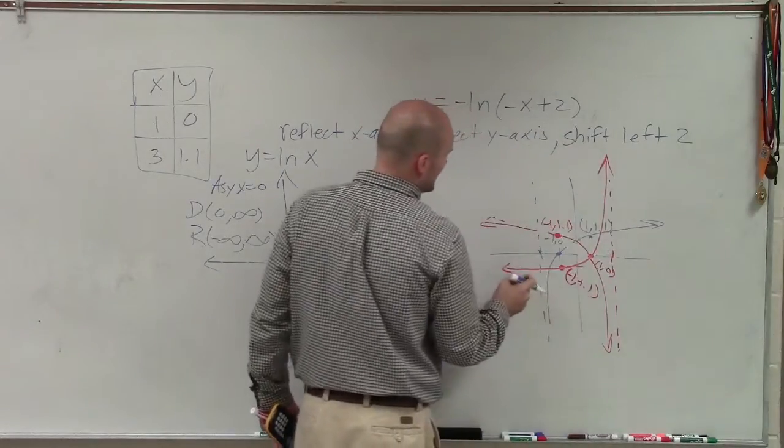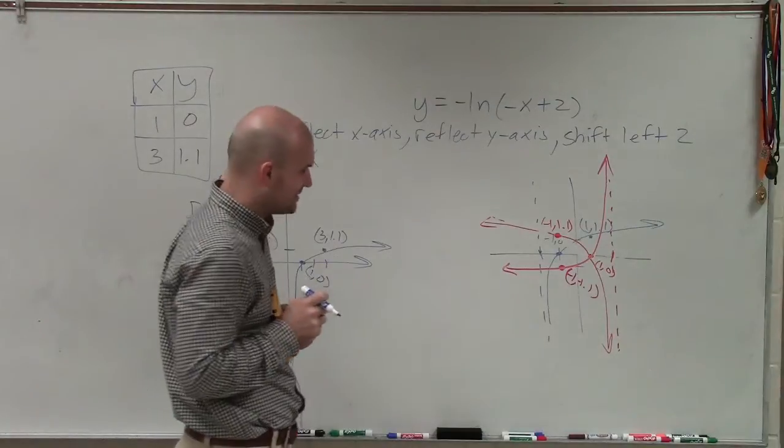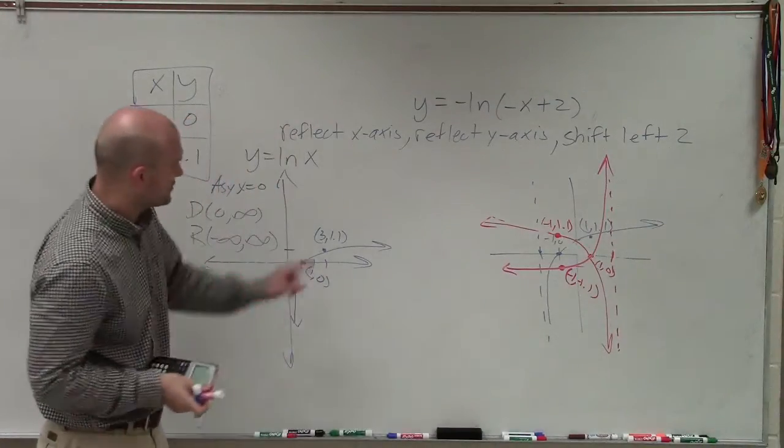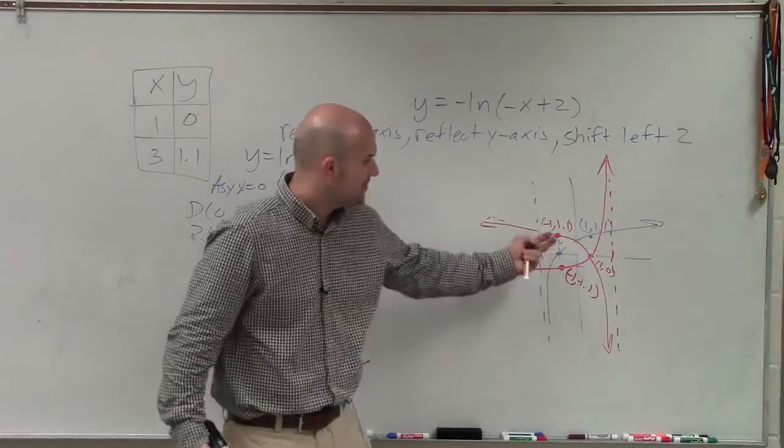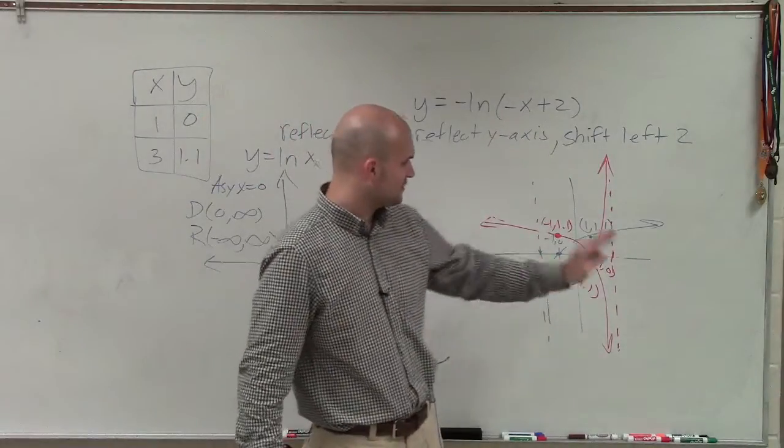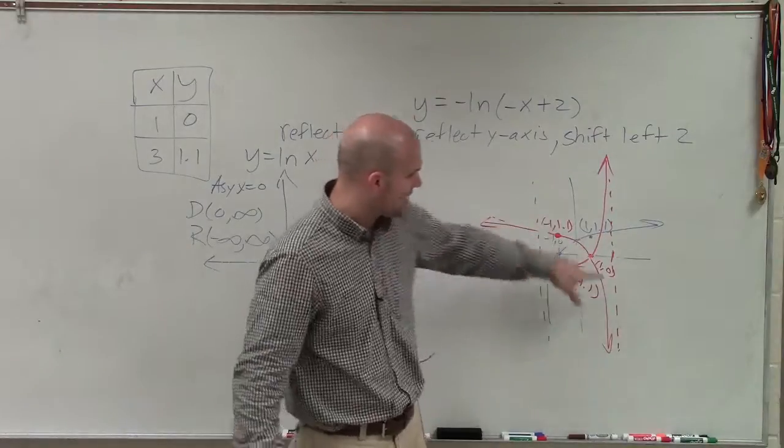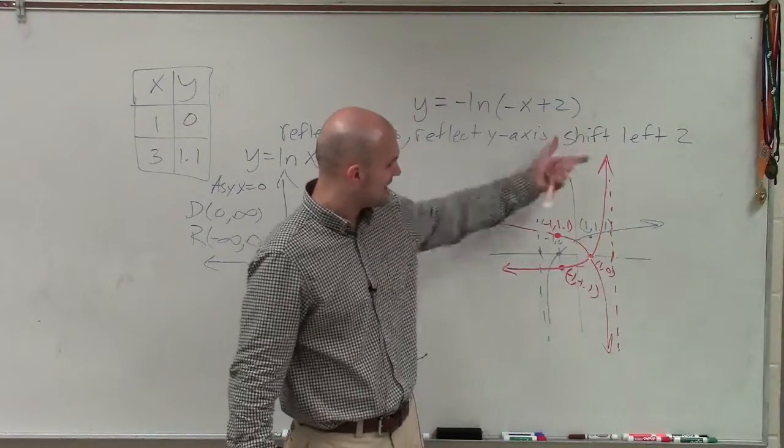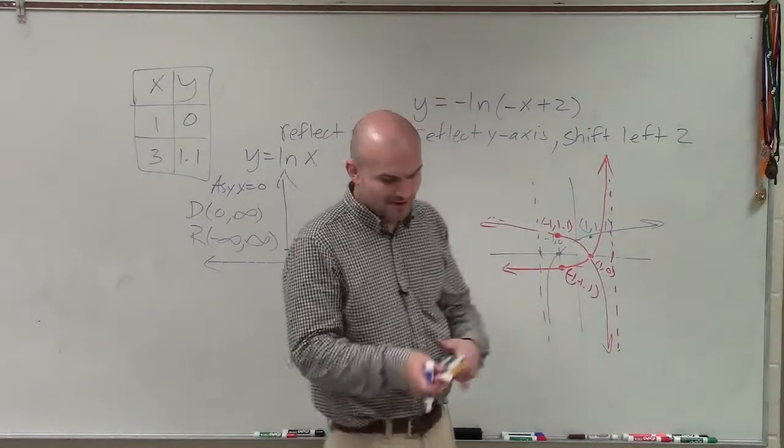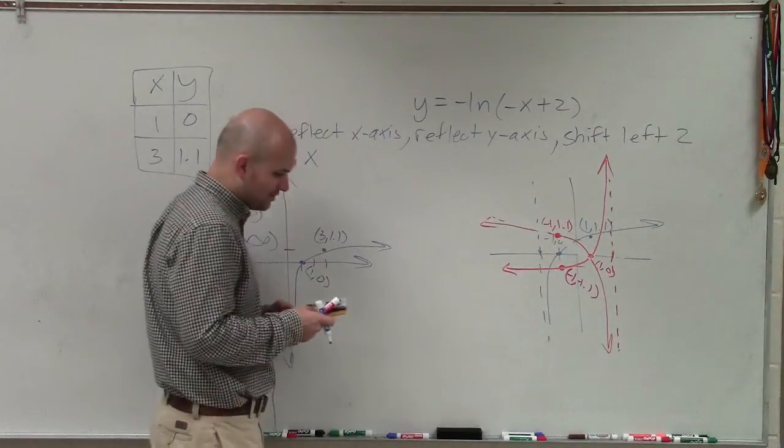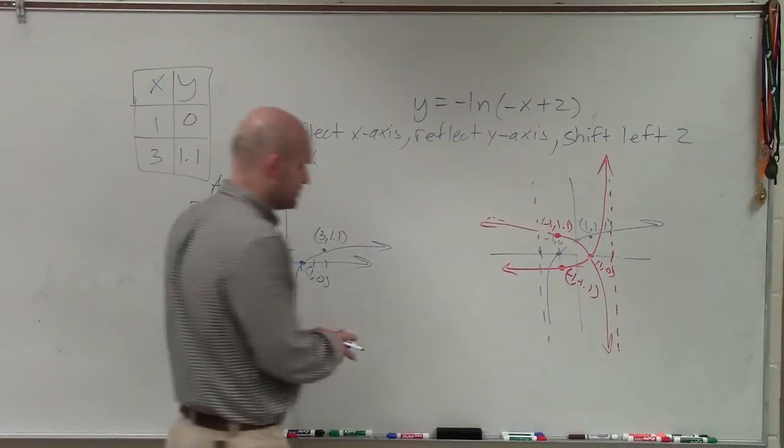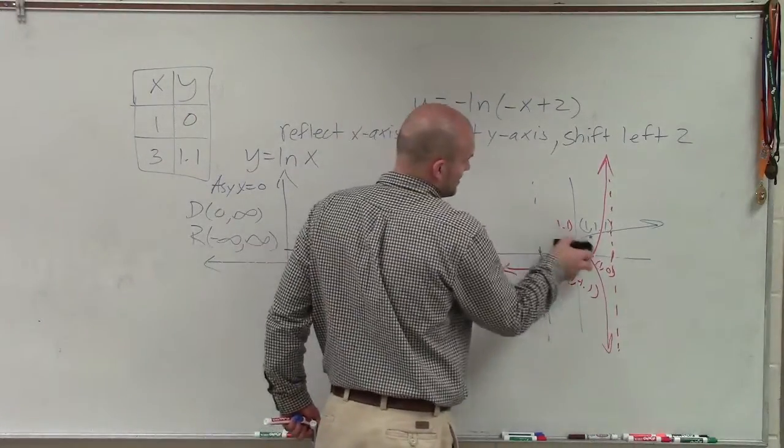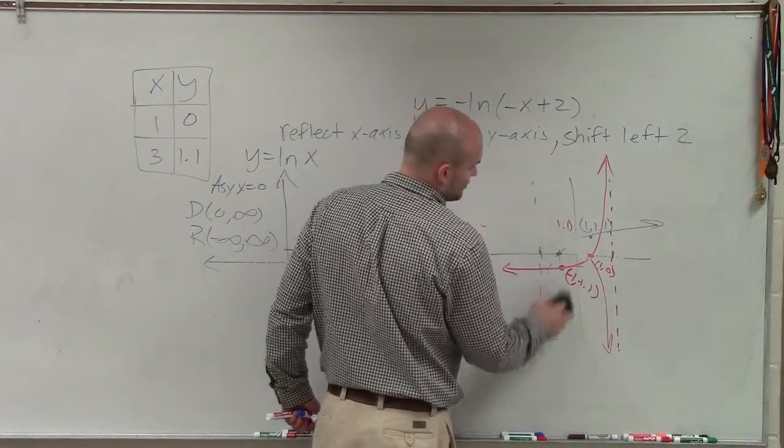So then this point, though, is still going to remain the same. And now my final graph is going to look something like that. So again, here's my original graph. I took this graph, and I shifted it left to, which gives me this graph. Then I take the blue and reflect it over the y axis, which gives me this graph. Then I reflect it over the x axis, which now gives me that graph. So when looking at it, now what we want to make sure we do is just eliminate these graphs that we used to help us graph our original function.